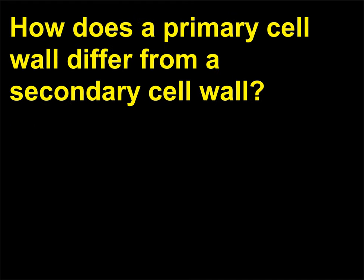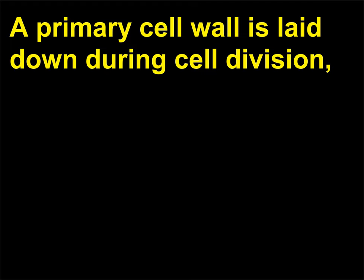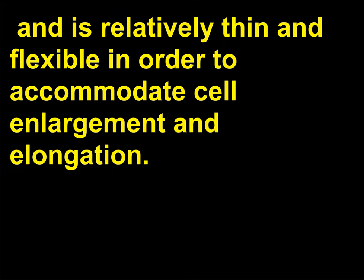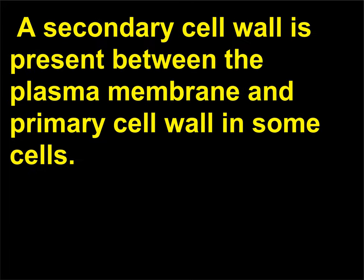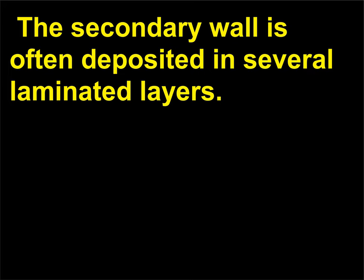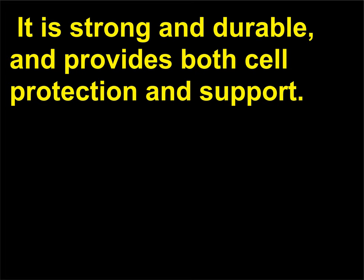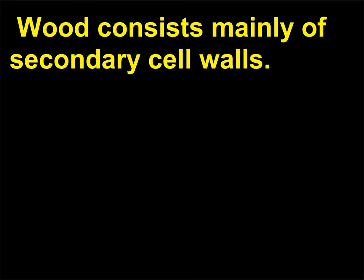How does a primary cell wall differ from a secondary cell wall? A primary cell wall is laid down during cell division and is relatively thin and flexible in order to accommodate cell enlargement and elongation. It is strengthened when the cell matures and stops growing. A secondary cell wall is present between the plasma membrane and primary cell wall in some cells. The secondary wall is often deposited in several laminated layers. It is strong and durable and provides both cell protection and support. Wood consists mainly of secondary cell walls.